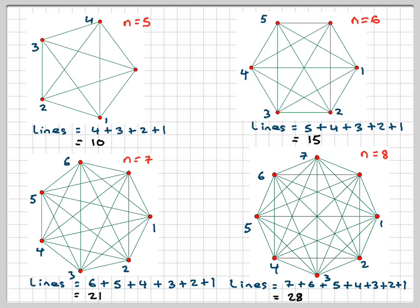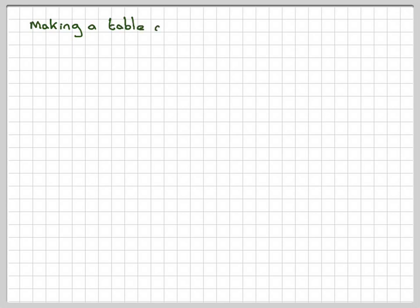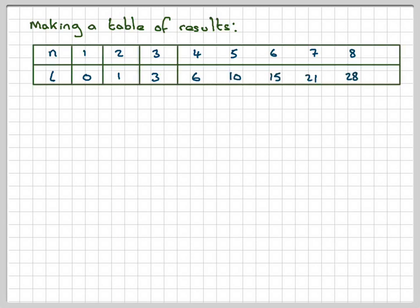The next thing to do is maybe put those results into a table. So we've got 1, 2, 3, 4, 5, 6, 7, 8, 9. So we've got zero for one. And we've got 1, 2, 3, 6, 10, 15, 21, 28.